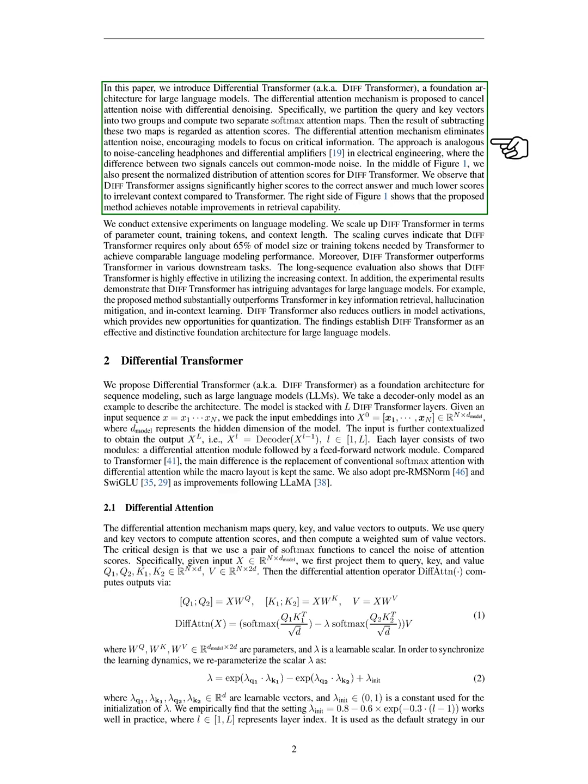We also present the attention score distribution for DIF transformer, showing that it assigns much higher scores to the correct answer and lower scores to irrelevant context compared to the standard transformer. Our method significantly enhances retrieval capabilities, as demonstrated by our extensive experiments on language modeling. When we scale up DIF transformer in terms of parameters, training tokens, and context length, we find that it requires only about 65% of the model size or training tokens needed by the standard transformer to achieve similar performance.